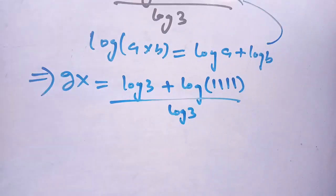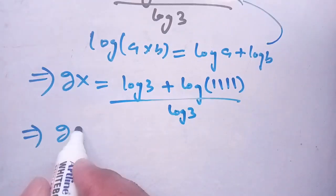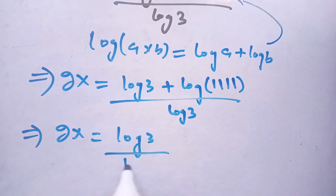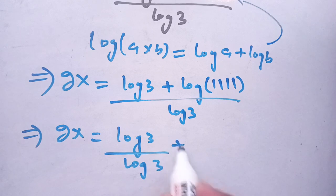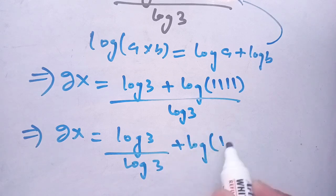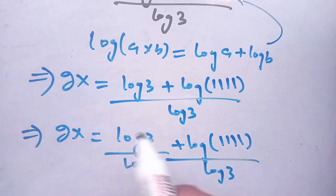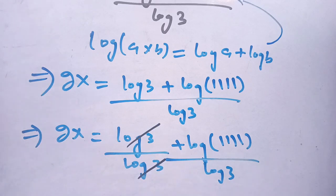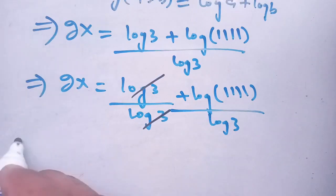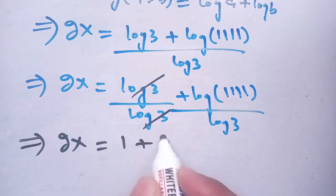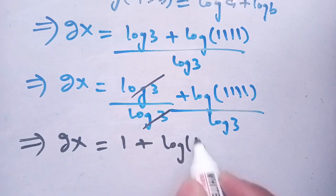Now we have 2x is equal to log of 3 plus log of 1111 divided by log of 3. We can cancel out log of 3 from the numerator with the denominator, giving 2x is equal to 1 plus log of 1111 divided by log of 3.